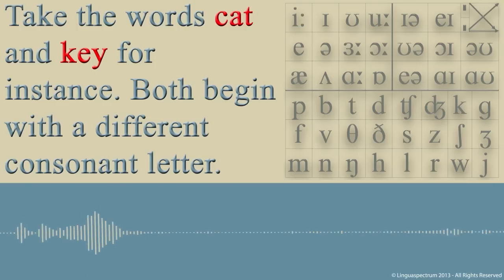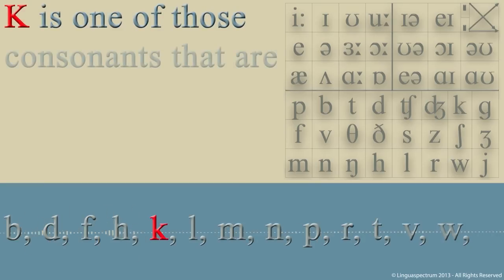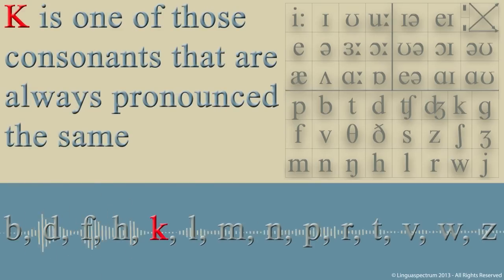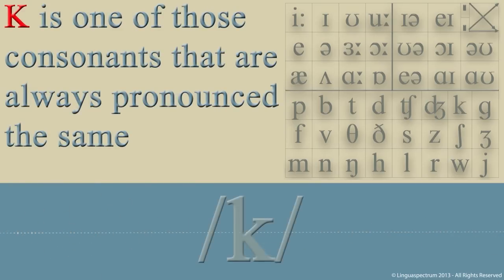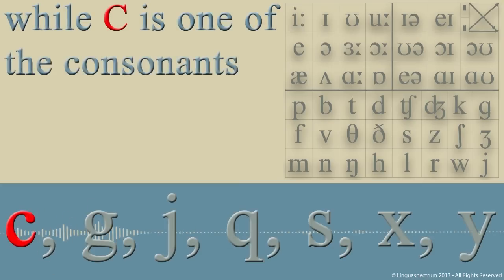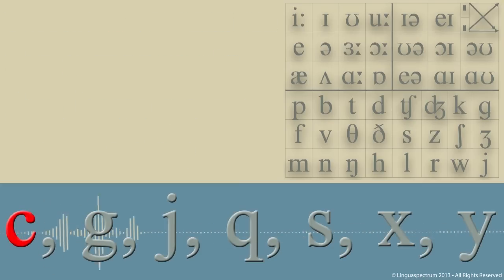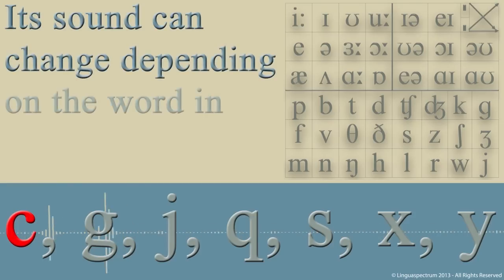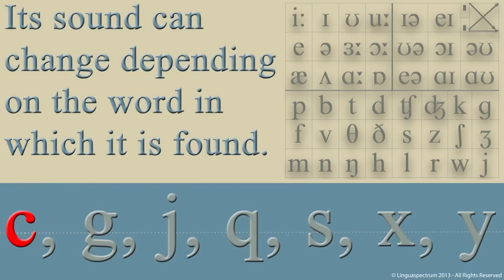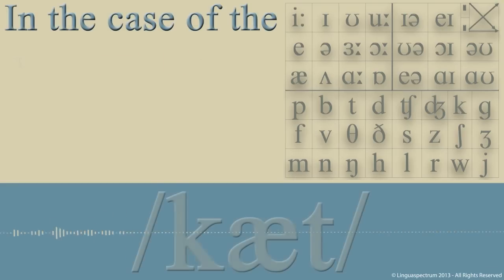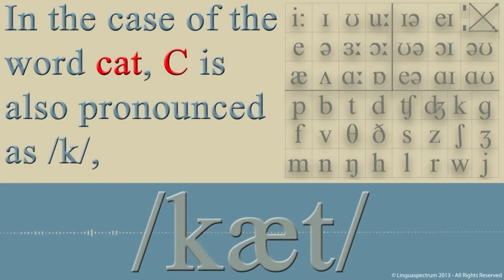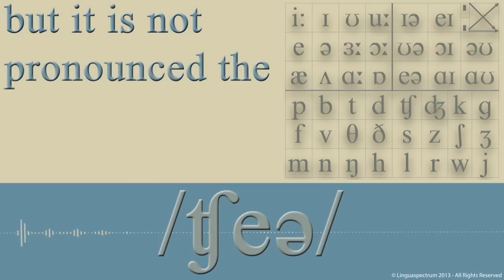Both begin with a different consonant letter. K is one of those consonants that are always pronounced the same, while C is one of the consonants that have no set sound value. Its sound can change depending on the word in which it is found.